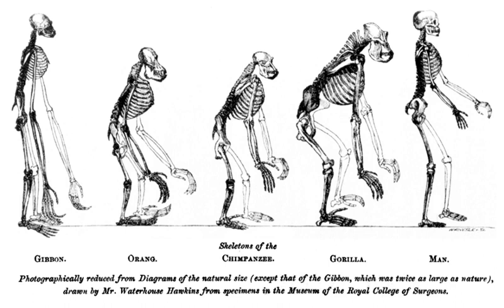Common descent describes how, in evolutionary biology, a group of organisms share a most recent common ancestor. There is massive evidence of common descent of all life on Earth from the last universal common ancestor, LUCA.